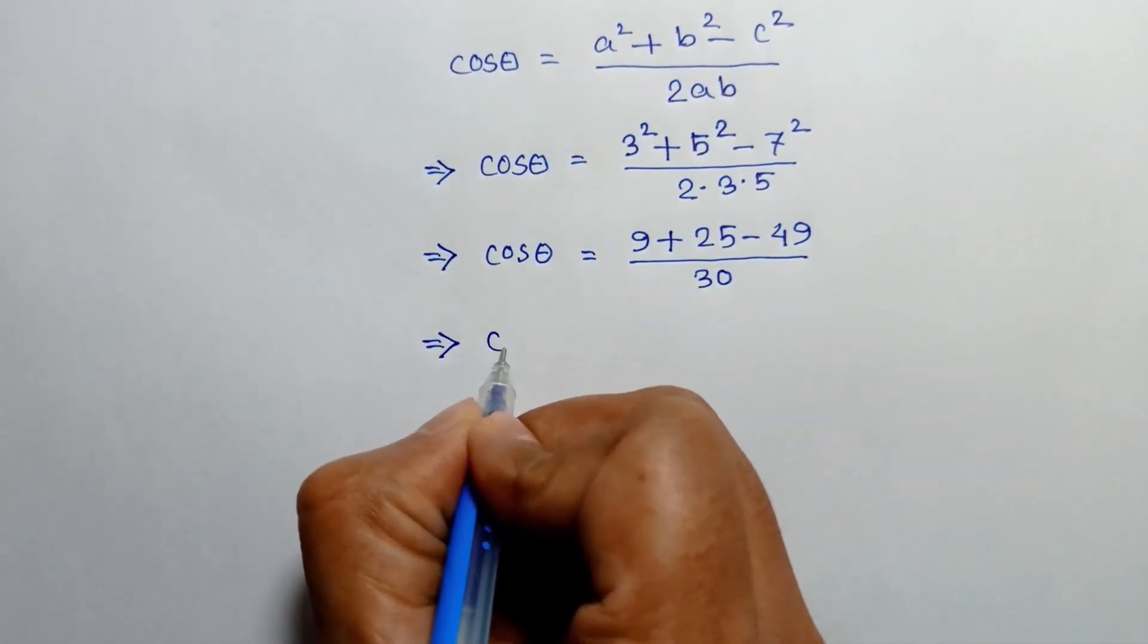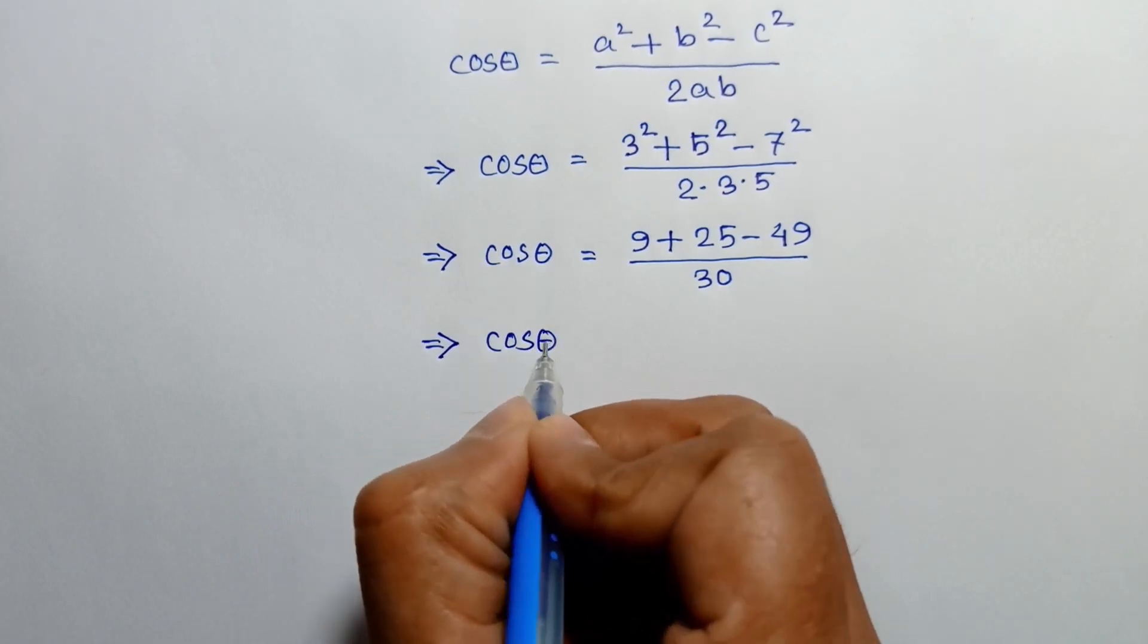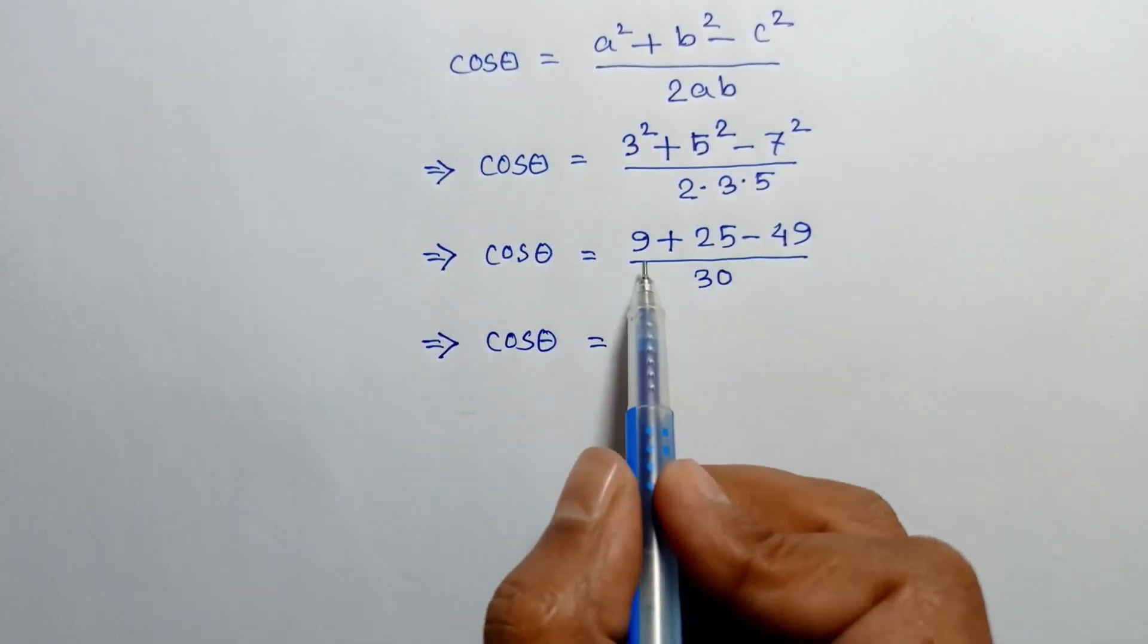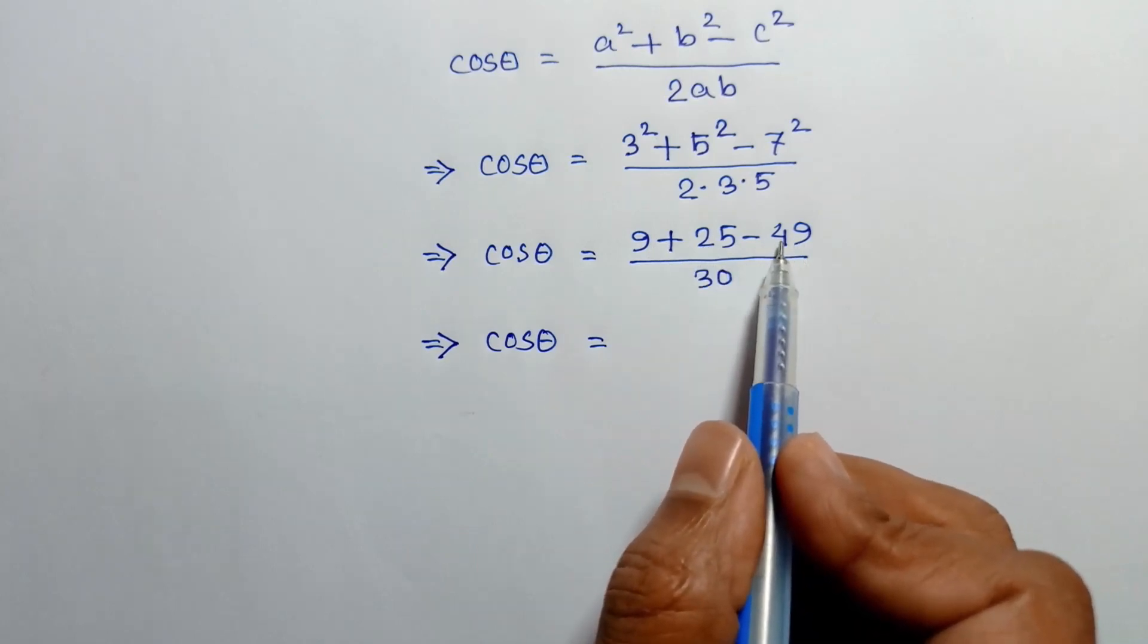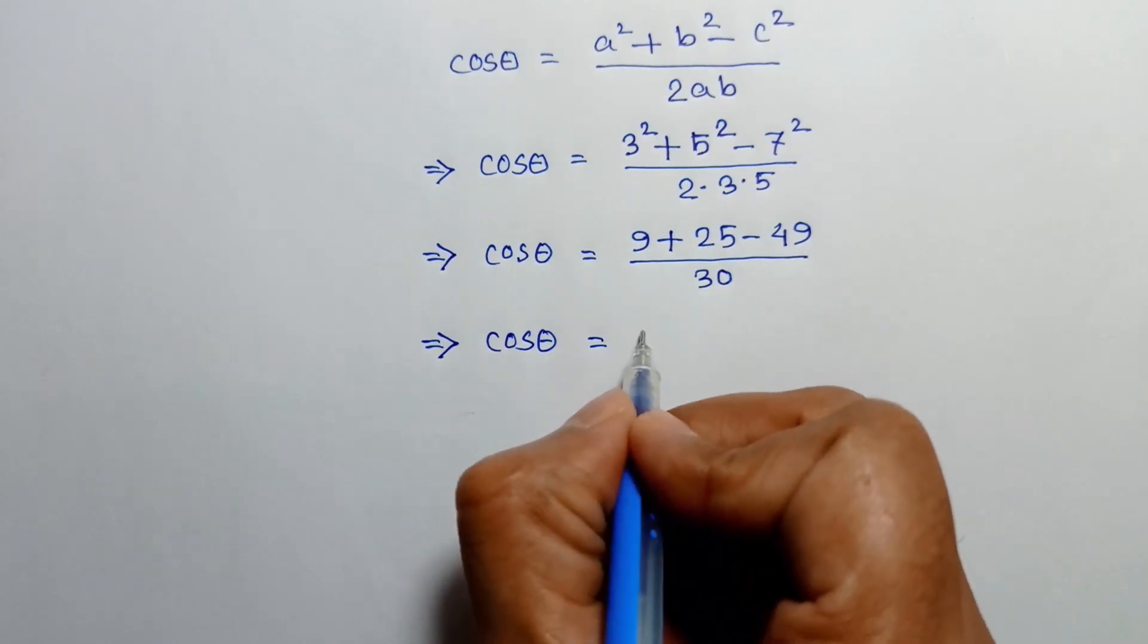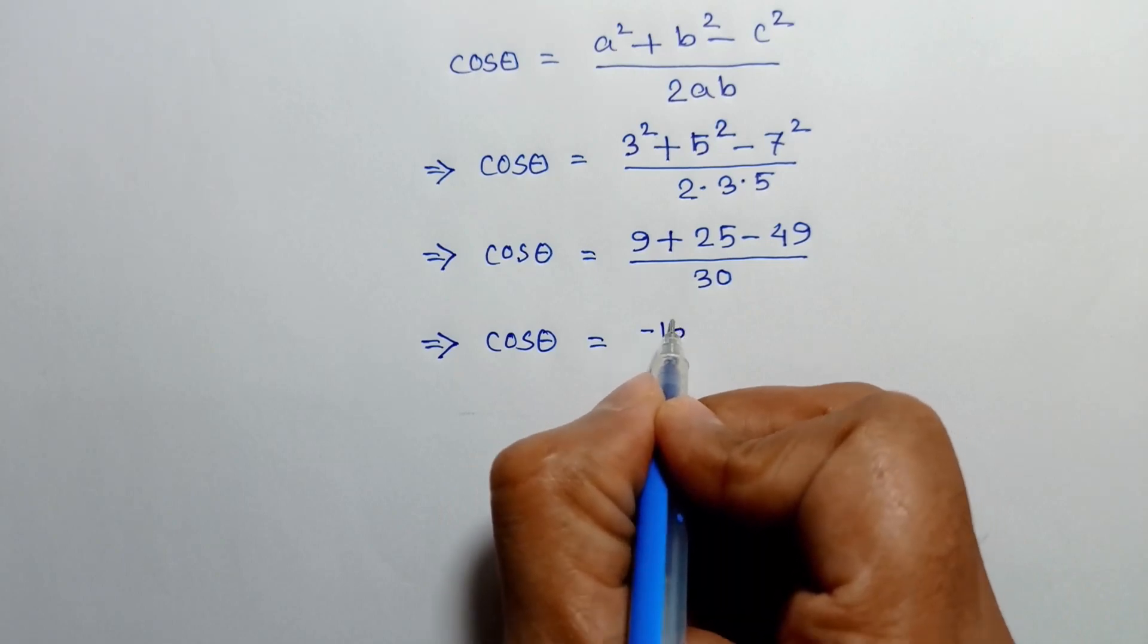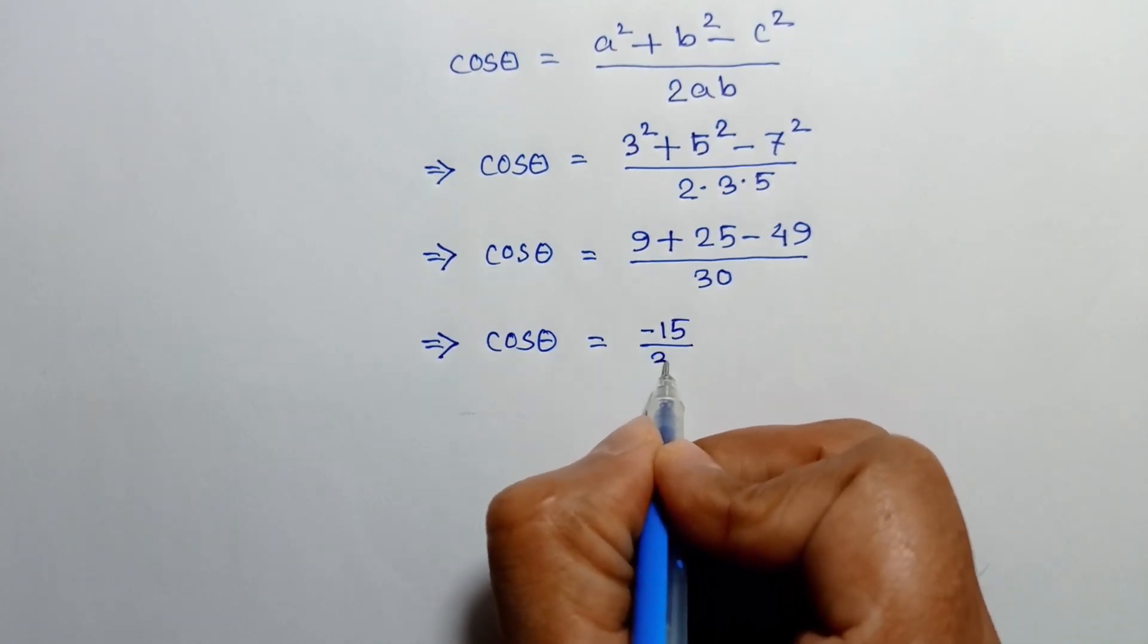Or cos theta is equal to 9 plus 25 is 34 minus 49 is negative 15 over 30.